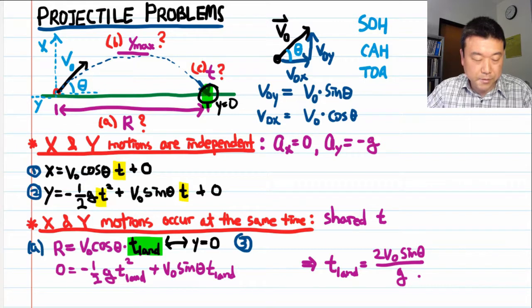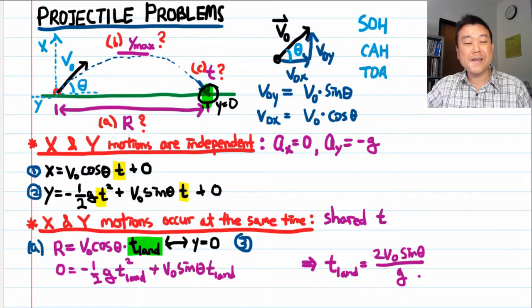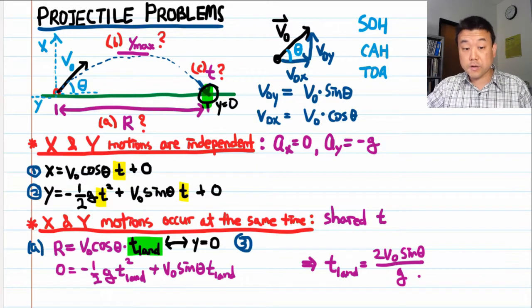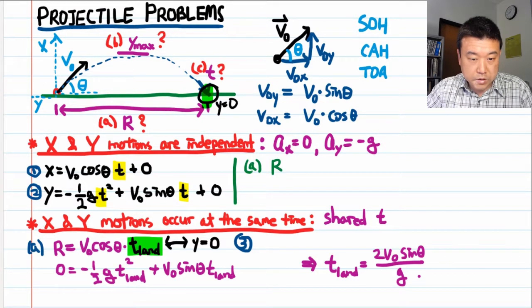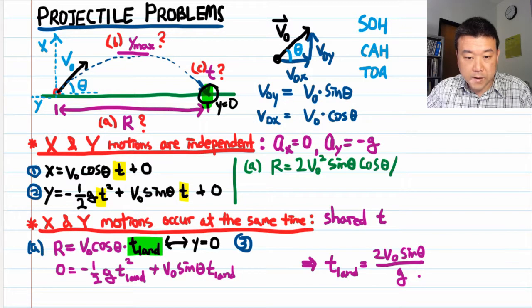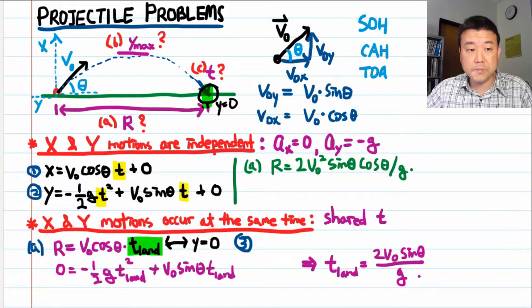Let me label previous equation equation 3. So plugging this into equation 3, we get the range right away. Let me write that down. Range is equal to 2 V naught squared sine theta cosine theta divided by g. Now you can actually simplify this a little bit more.